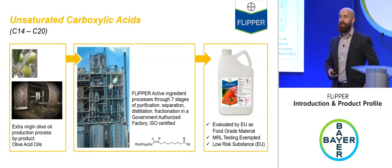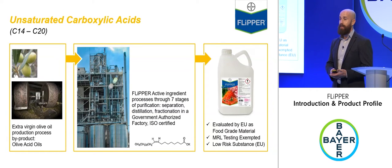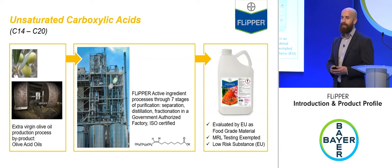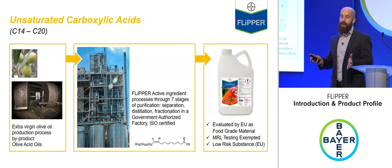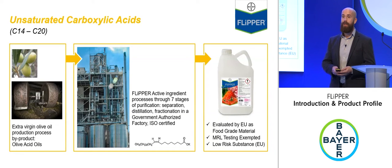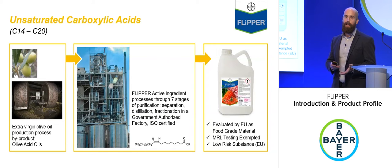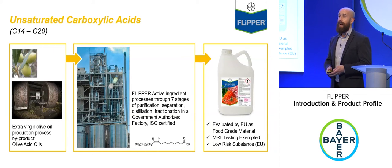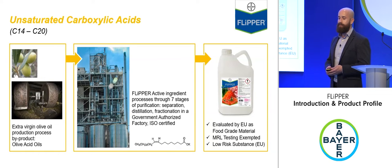The active ingredient in Flipper is unsaturated carboxylic acids. These are naturally occurring compounds, and we extract and derive our unsaturated carboxylic acids from olive oil.